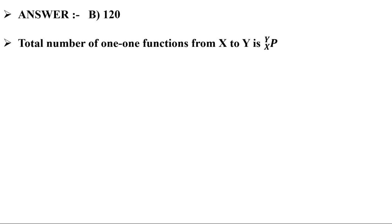We have a formula for it: the total number of one-one functions from X to Y is ʸPₓ, where P stands for permutations.